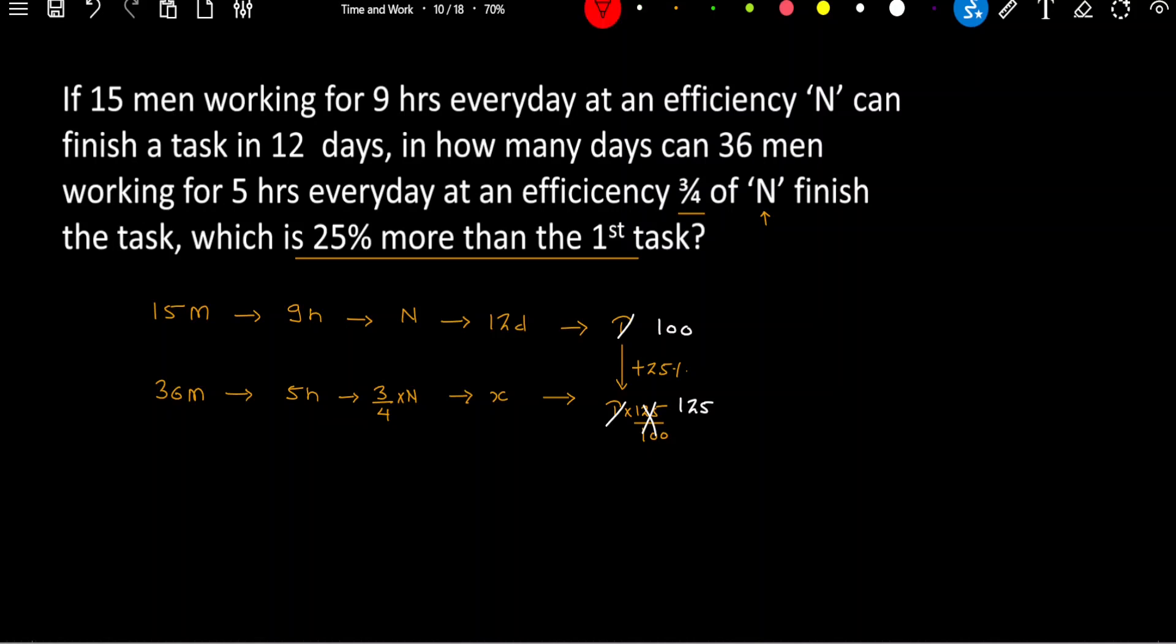So let us assume initial task as 100 unit and then increase this by 25%. The new value of task must be 125. I hope this much is understood. And now all you need to do is, you have to use this formula, m into d into h, and we have an extra variable here, efficiency is equal to work. Using this formula, make two expressions. So in the first case, the number of men are 15. They worked for 12 days, 9 hours every day at an efficiency of n. And this way they have completed this task of 100 units. Now the new group has to complete 125 units of task, where the number of men are 36 and they are working for 5 hours every day at an efficiency of 3 by 4 of the previous. And we have to find number of days. Let's call it x.